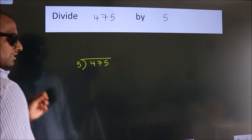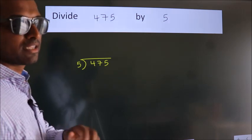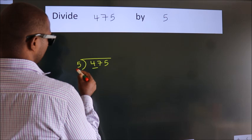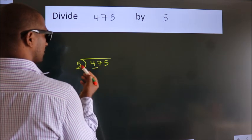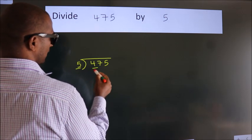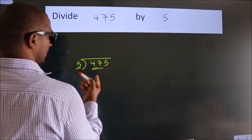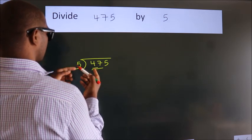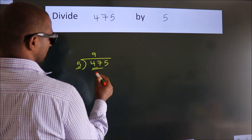This is step 1. Next, here we have 4, here 5. 4 is smaller than 5, so we should take two numbers: 47. A number close to 47 in the 5 table is 5 nines, 45.